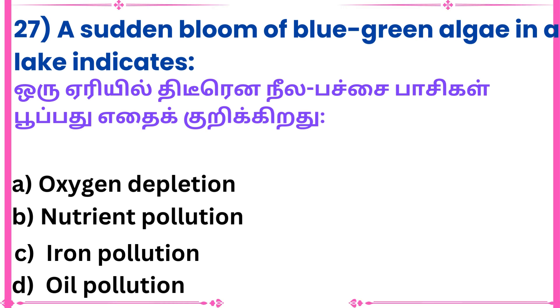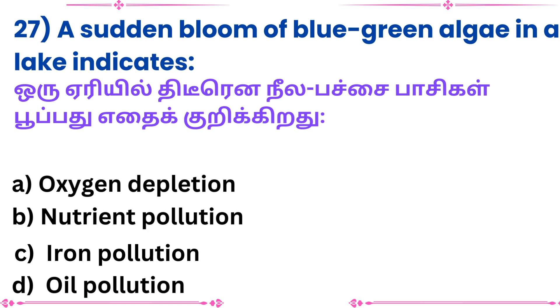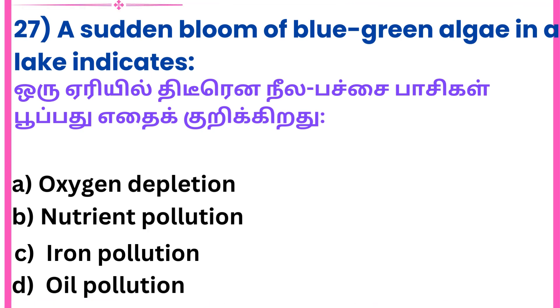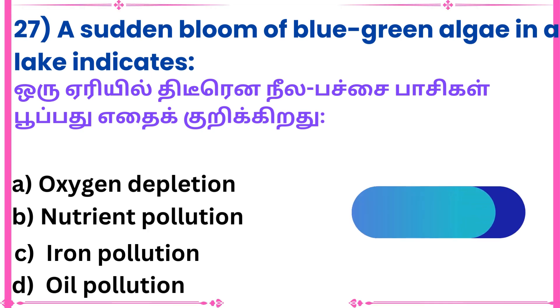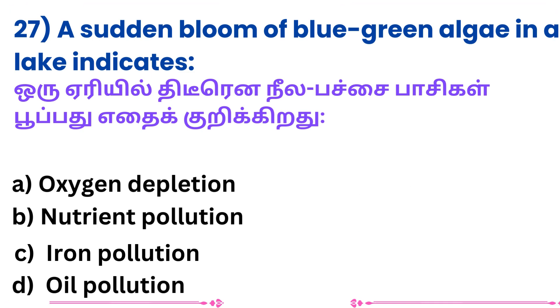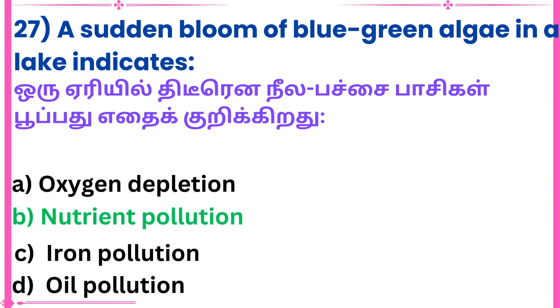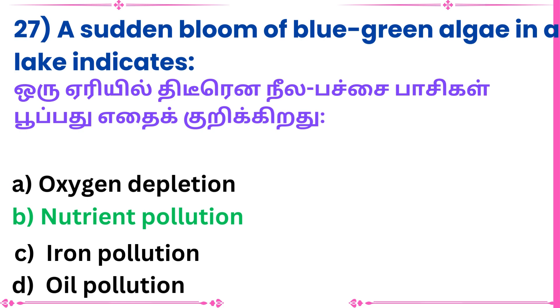27th question: A sudden bloom of blue-green algae in a lake indicates what? Answer: Nutrient pollution.